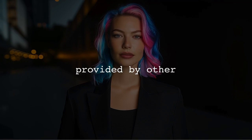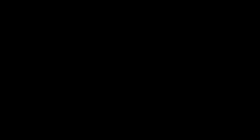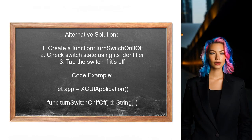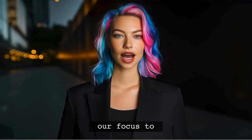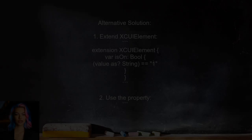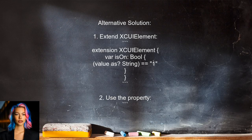Now let's look at the answers provided by other users. An alternative approach involves creating a function in Swift that checks the state of a UISwitch. This function, named TurnSwitchOnIfOff, taps the switch only if it is currently off. Now, let's shift our focus to a different response: an alternative approach involving extending the XCUIElement class.